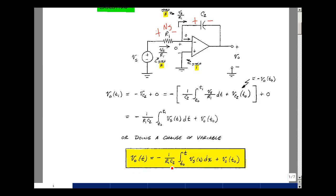So the output voltage is minus 1 over R1 C2, the integral from T0 to T, voltage V sub s, dx, plus the initial voltage across the output terminals in the op-amp.